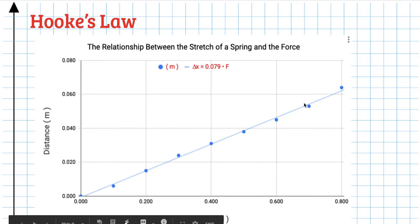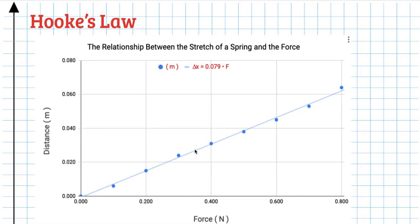Hopefully you got a fairly straight line. You're going to find a math model — on the y-axis you have the distance it stretched, which is delta x, and on the x-axis you have the force. You should have some kind of slope and a relatively straight line, so we would say that the distance the spring is stretched is proportional to the force applied to it.